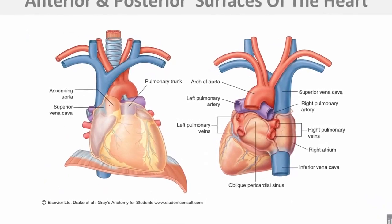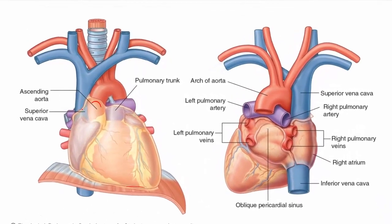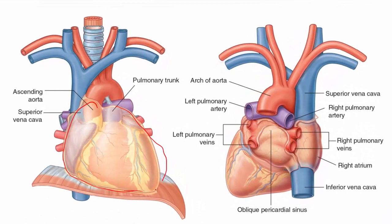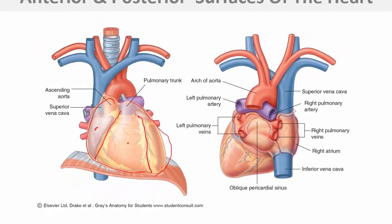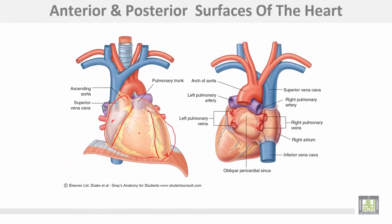The sternocostal surface of the heart is divided by the atrioventricular groove or coronary groove into the atrial part and the ventricular part. The ventricular part is subdivided by the anterior interventricular groove into right two-thirds (right ventricle) and left one-third (left ventricle). The apex is completely formed by the left ventricle.